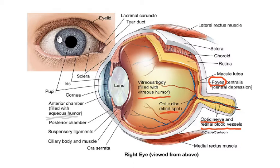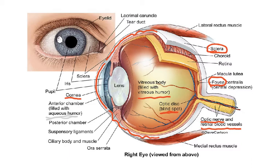Now for the different layers: the outermost layer in front is called the cornea, and the back part is called the sclera. Inside that is a layer made up of blood vessels — this second layer is called the choroid. Then the third and innermost layer is called the retina.